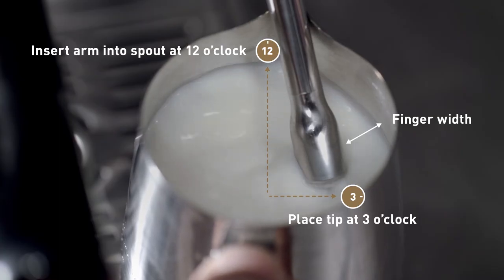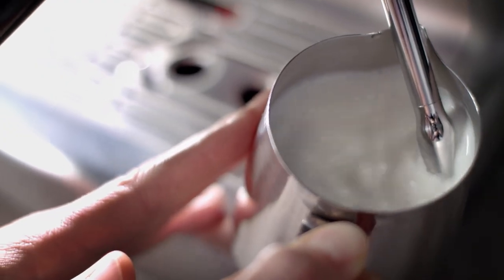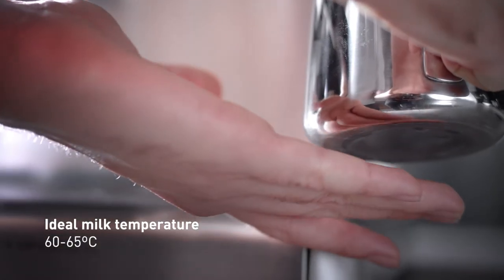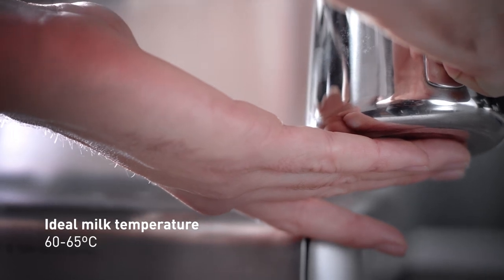Once on, the texturing should make a smooth hissing noise and a whirlpool action should be created in the jug. The milk is ready when the base of the jug is too hot to touch for more than 3 seconds.